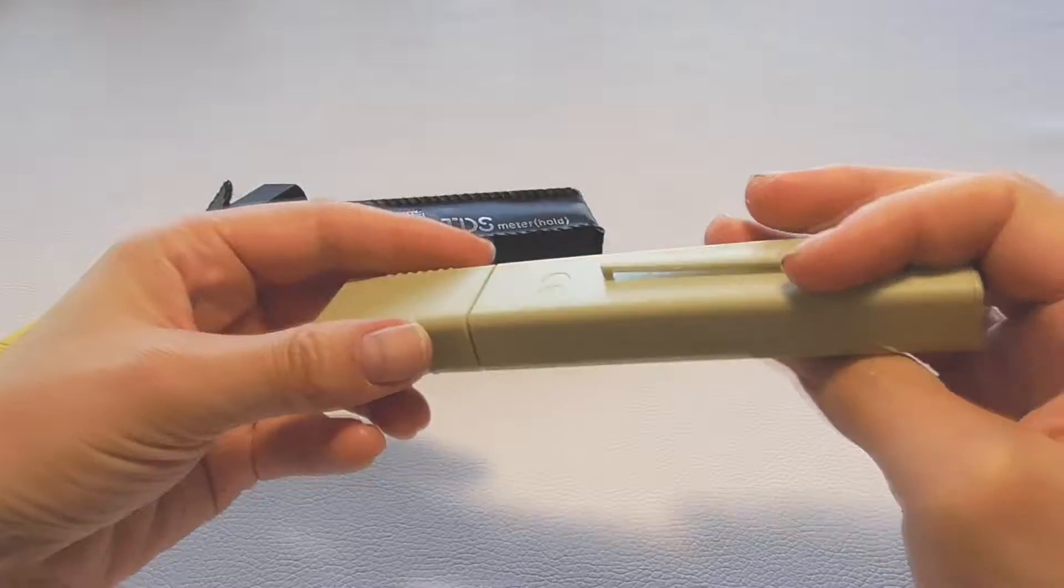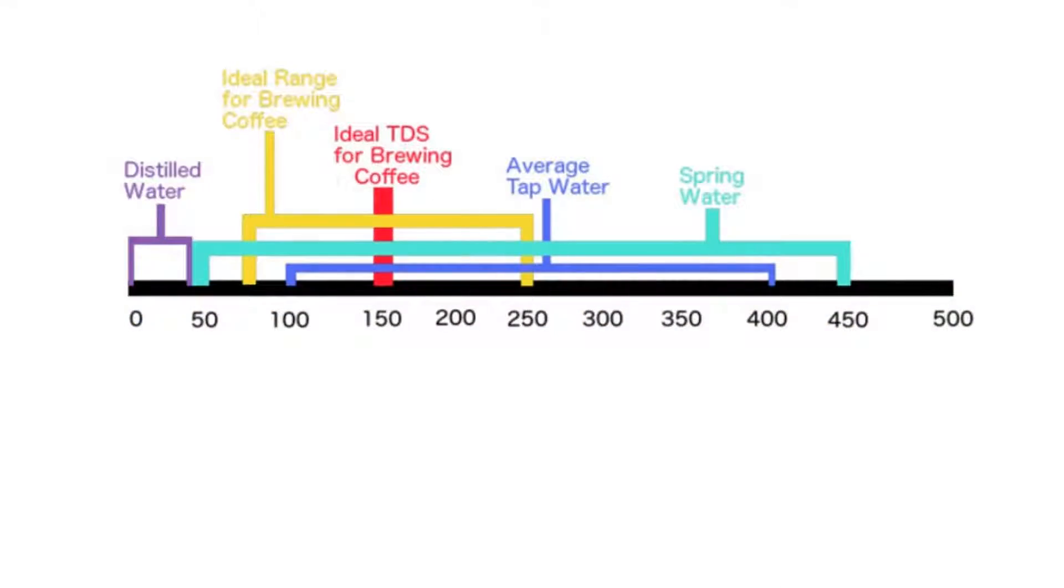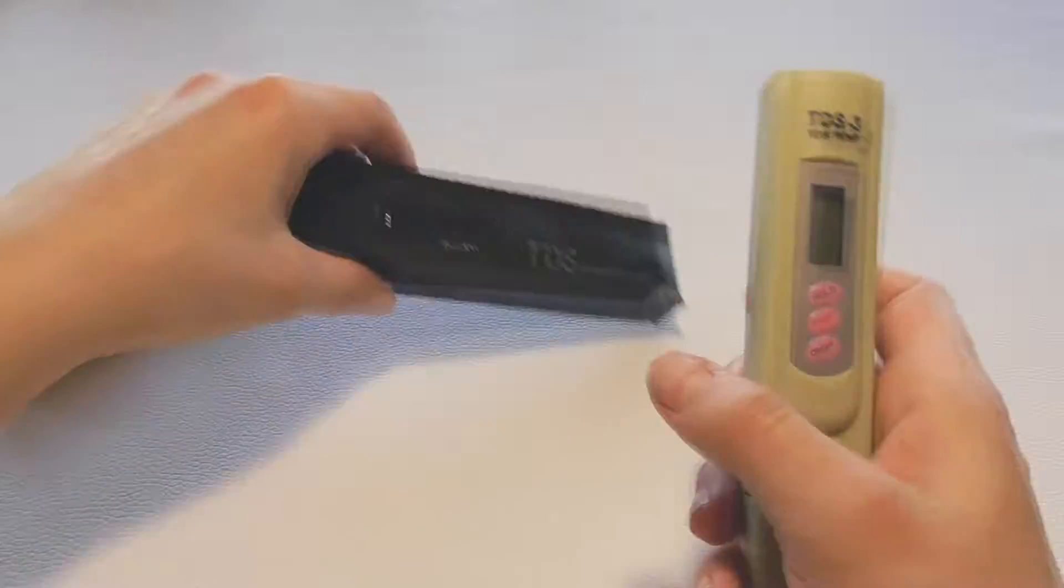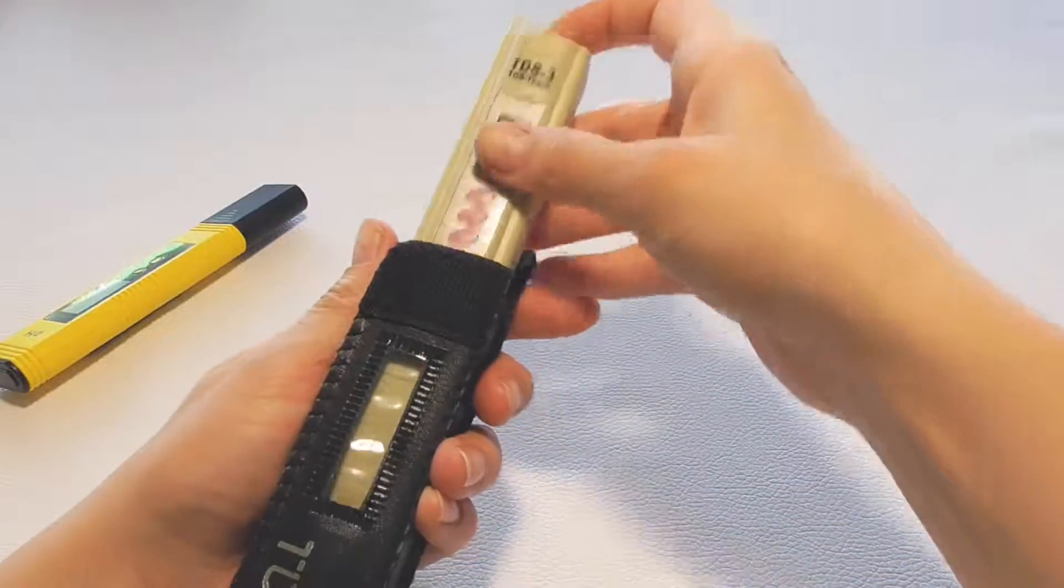A TDS range from 50 to 150 is the best for drinking. If water has TDS level above 500 ppm then you should use some kind of purifier.